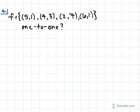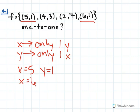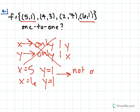Here we're given a set of ordered pairs and we're asked to figure out if it's one-to-one. When given a set of ordered pairs, you need to see if each x goes to only one y and each y goes with only one x. Checking through our pairs — (5,1), (4,3), (2,7), and (6,1) — we have a problem: where x equals 5, y equals 1, and where x equals 6, y also equals 1. This violates our condition for one-to-one, so this function is not one-to-one.